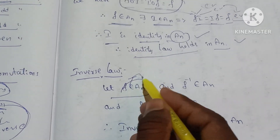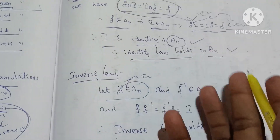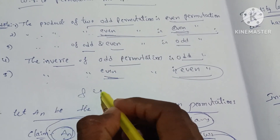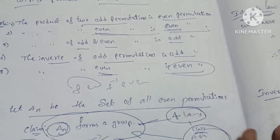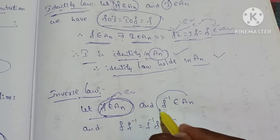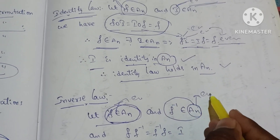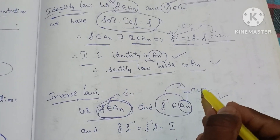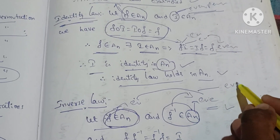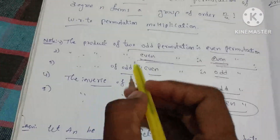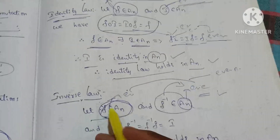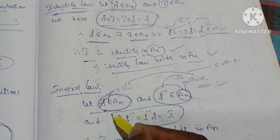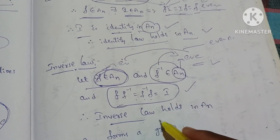Inverse law: Let f belong to Aₙ, so f is an even permutation. The inverse of an even permutation is also even, so f⁻¹ belongs to Aₙ. Therefore f∘f⁻¹ = f⁻¹∘f = I. Hence the inverse law holds in Aₙ.